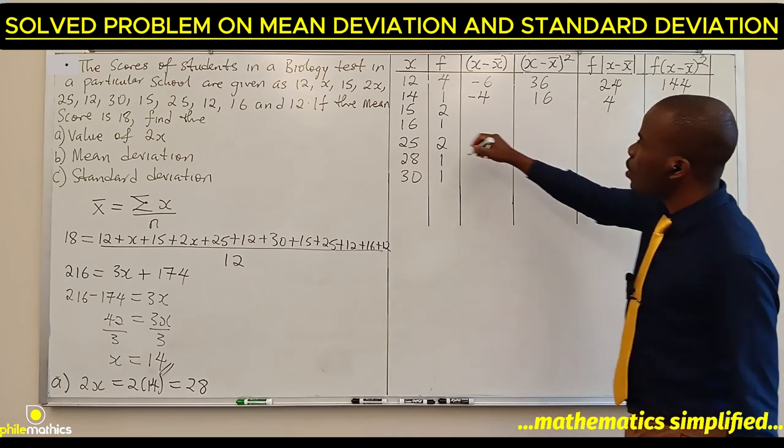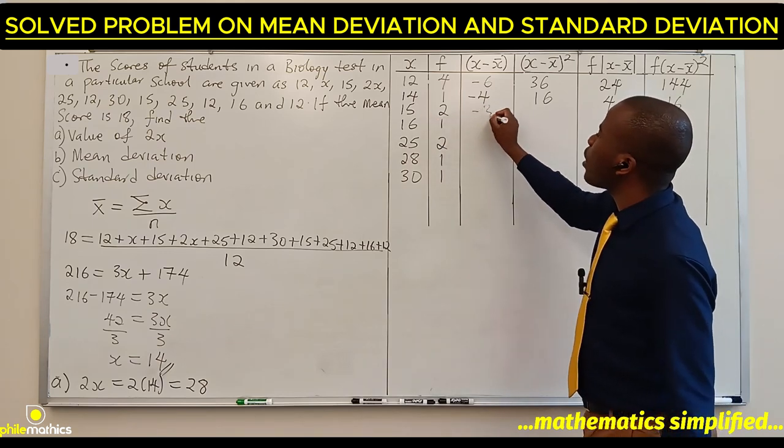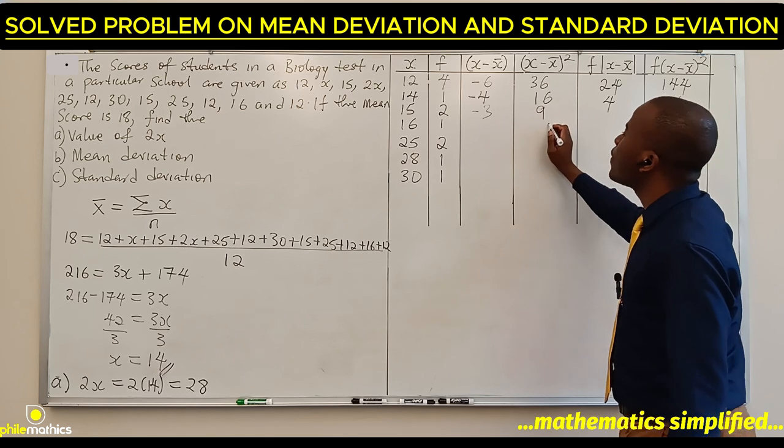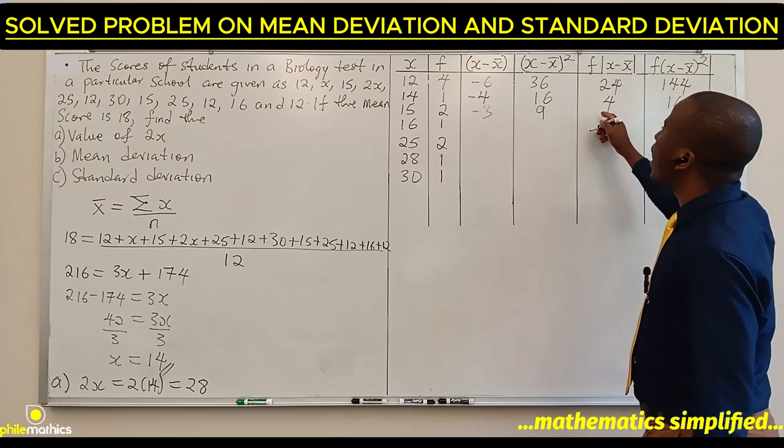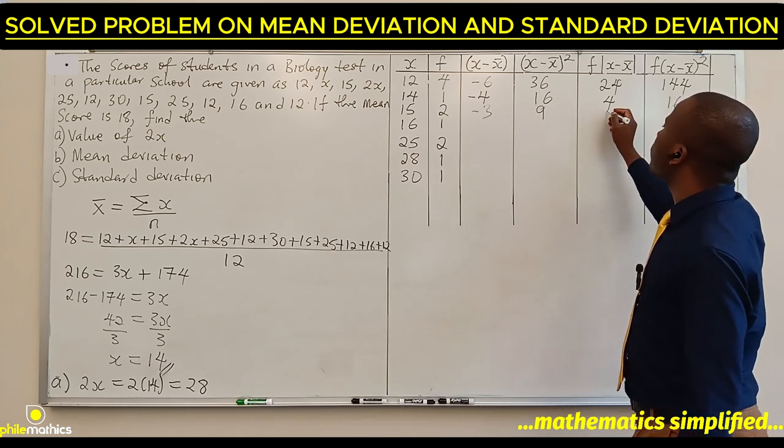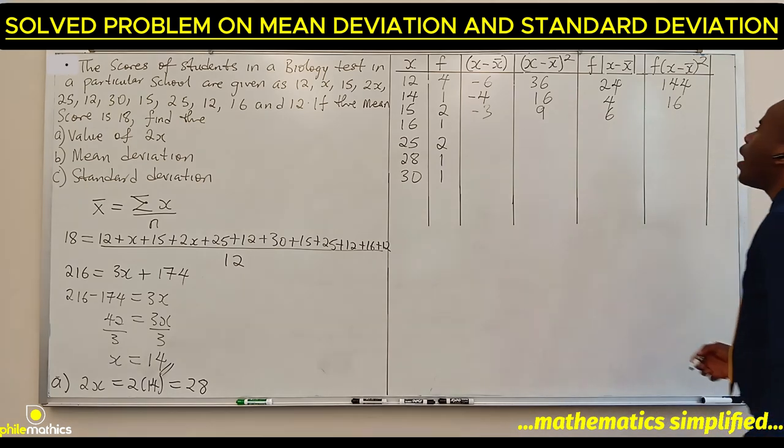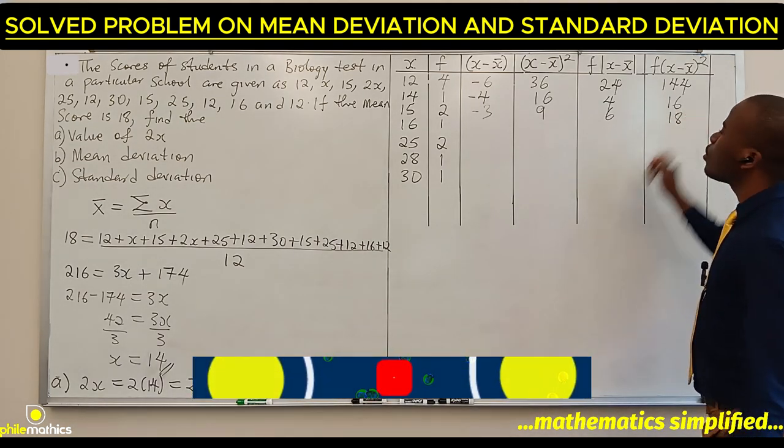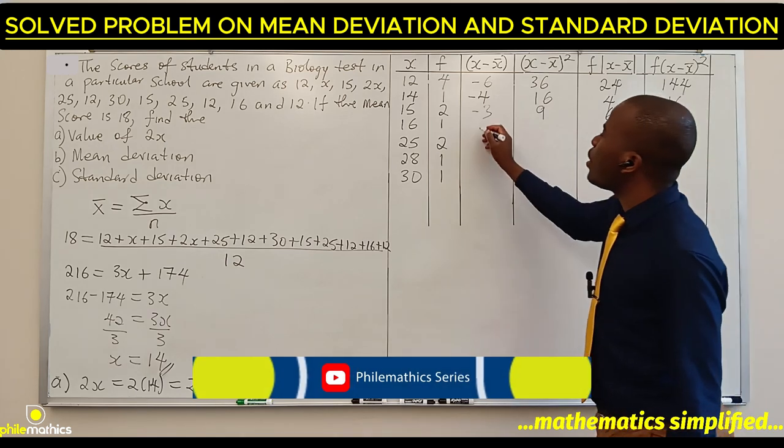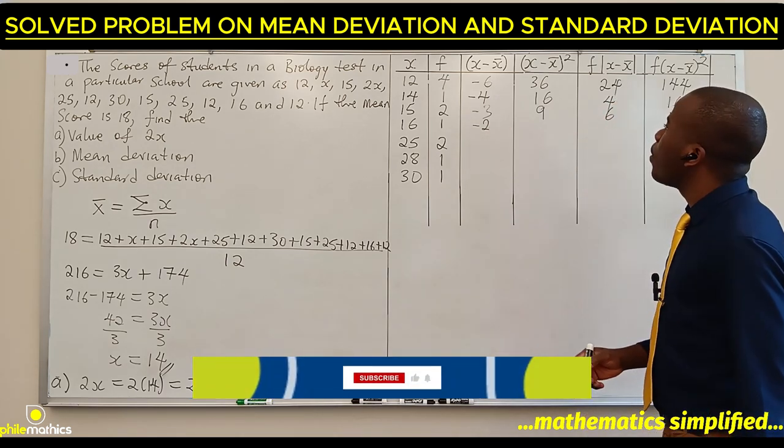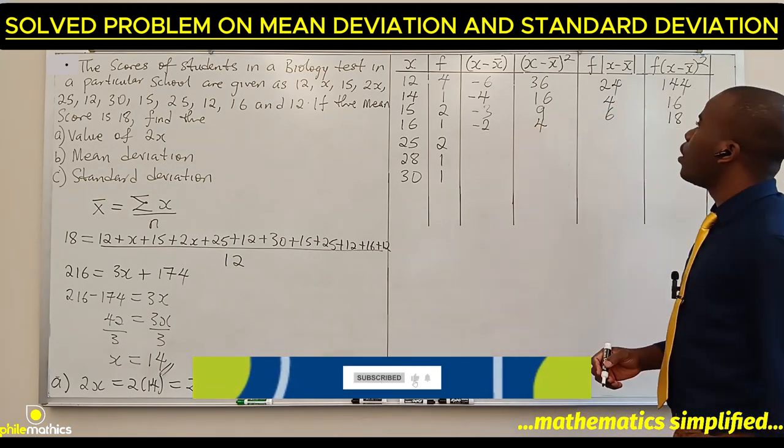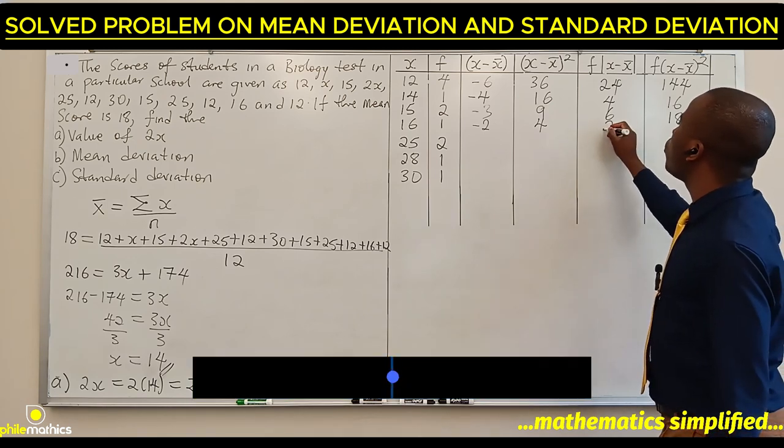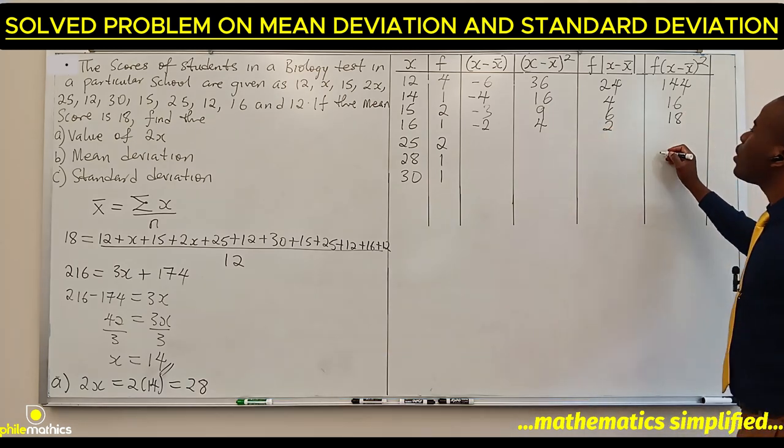15 minus 18 is minus 3. Minus 3 squared is 9. 2 times 3 is 6, and 2 times 9 is 18. 16 minus 18 is minus 2. Minus 2 squared is 4. 1 times 2 is 2, and 1 times 4 is 4.